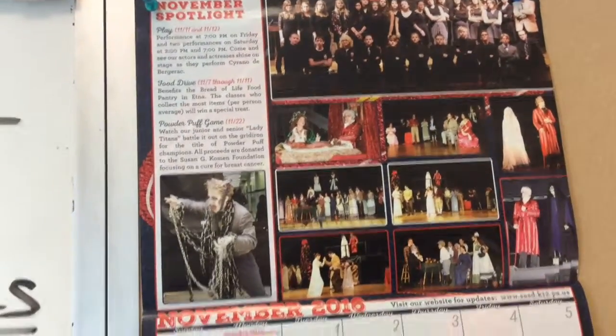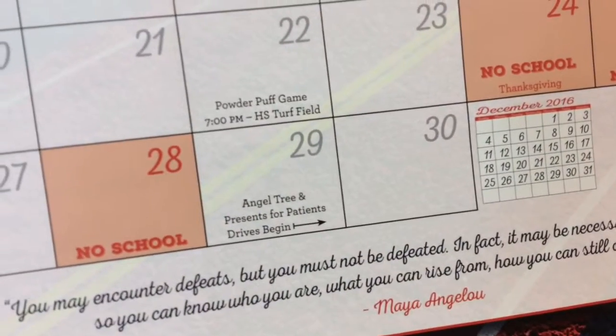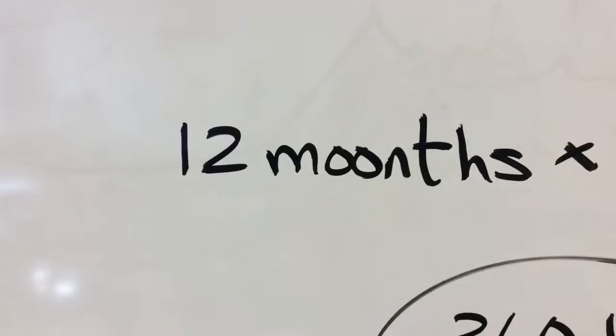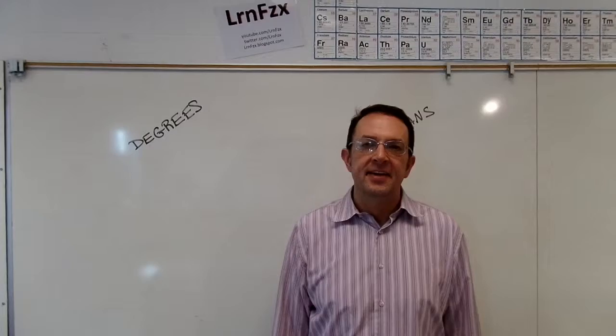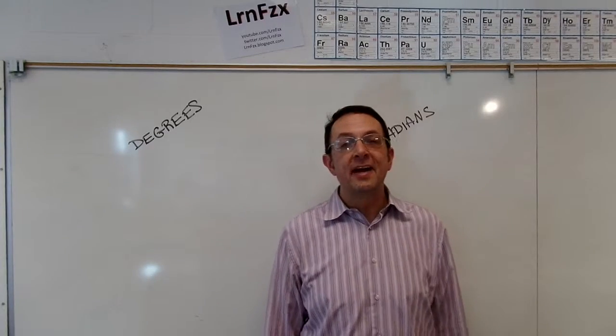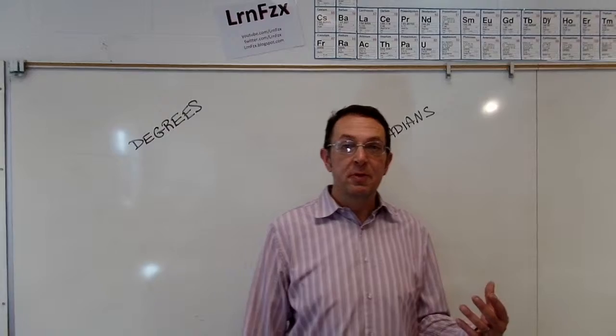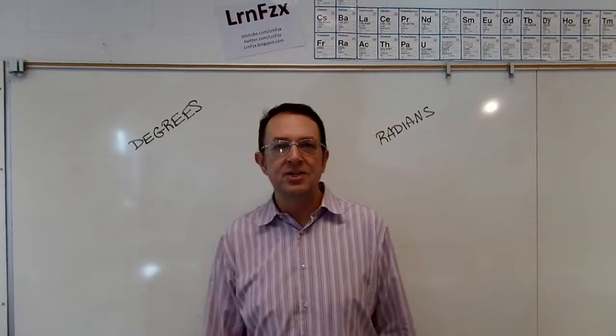There are 360 degrees in a circle. That's because there are exactly 30 days in a month and 12 months in a year, and 12 times 30 is 360 days in a year. Exactly. Some old calendars even had a leap month every five or six years to catch up.